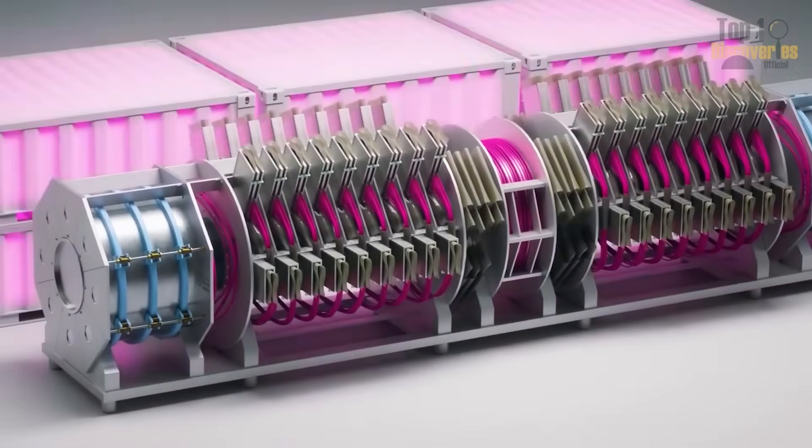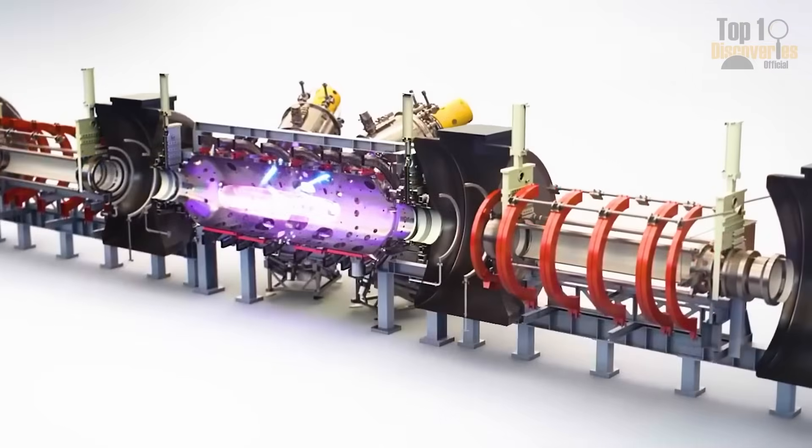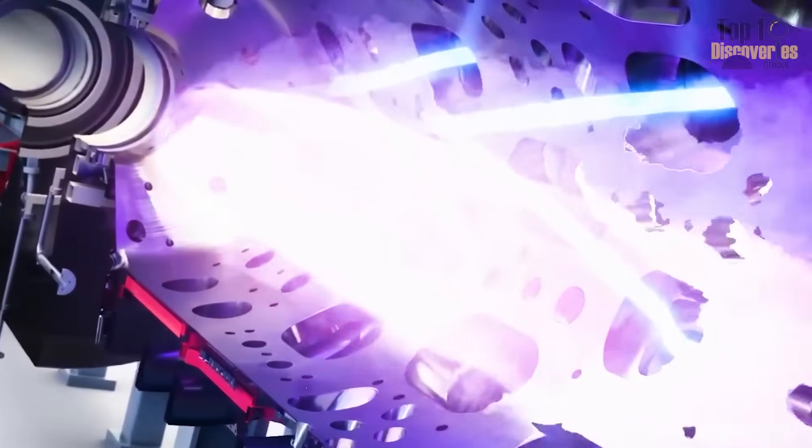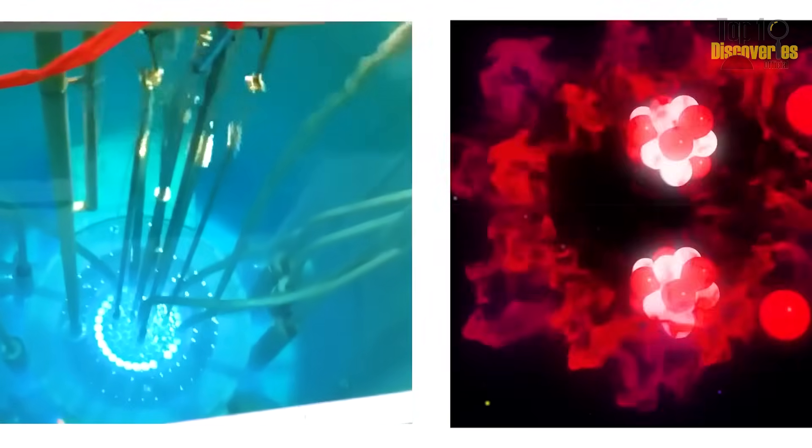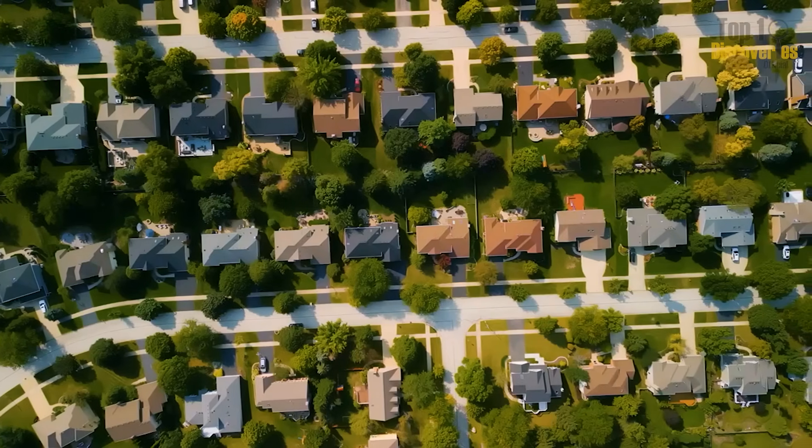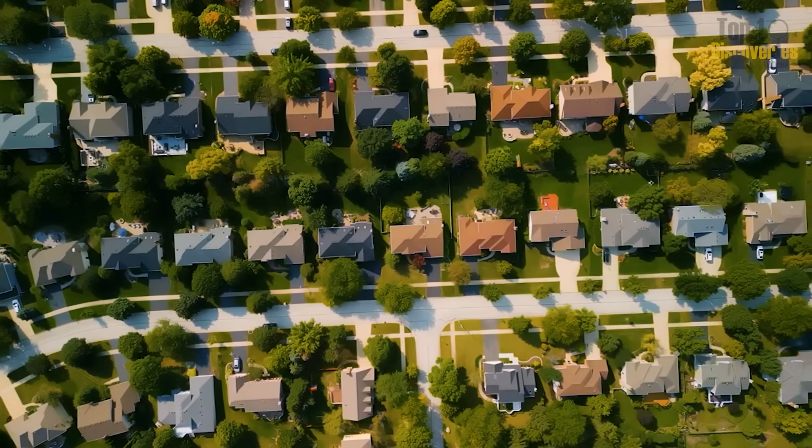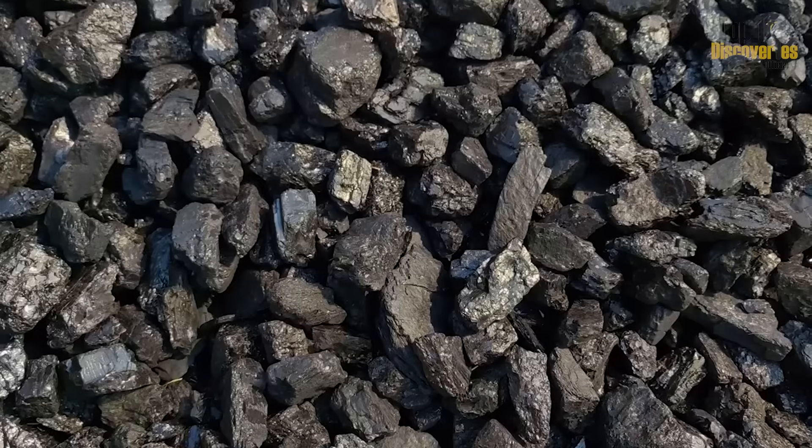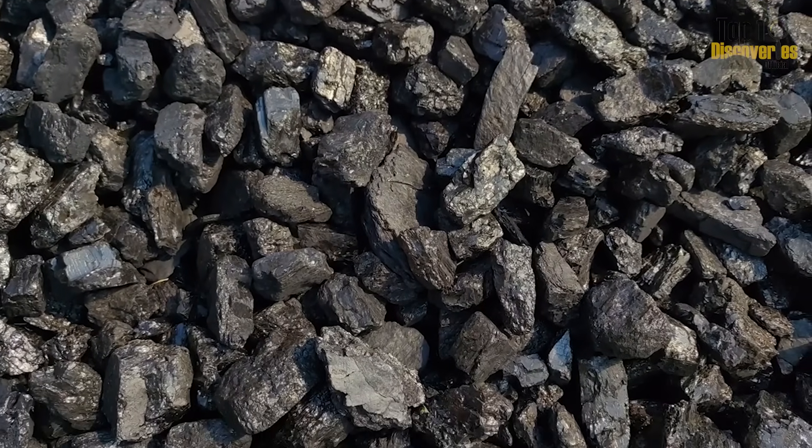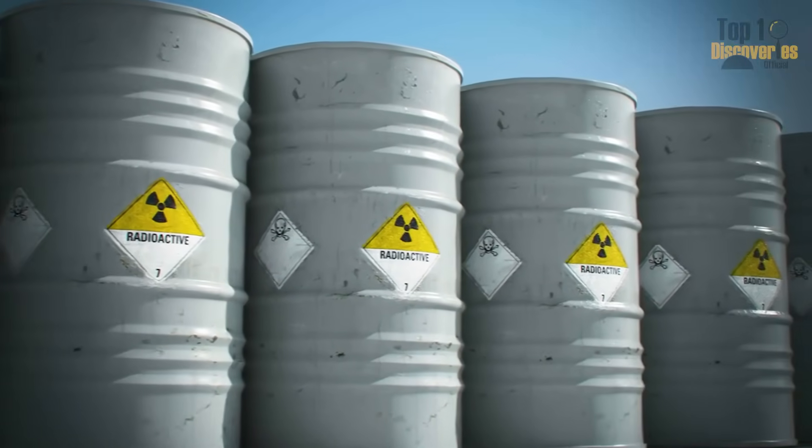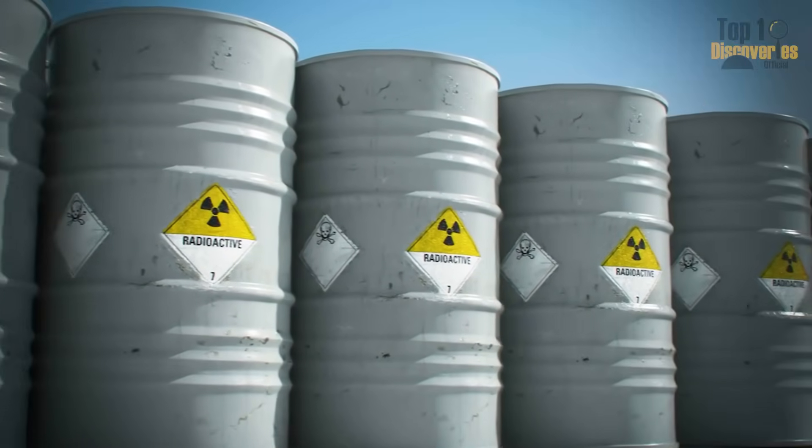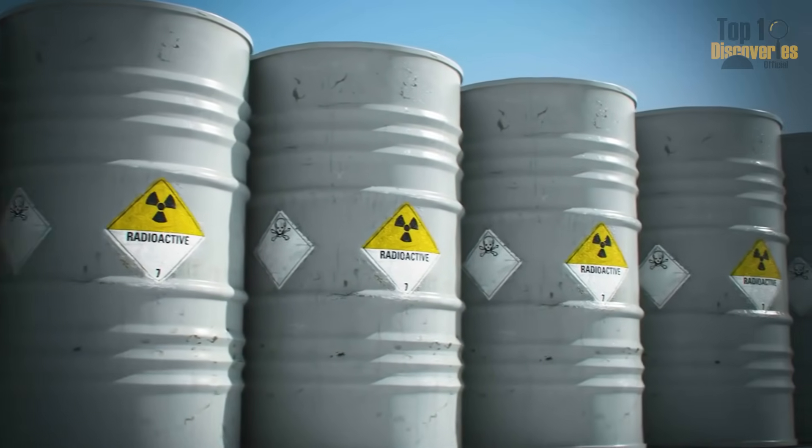Unlike uranium, thorium does not undergo fission on its own, but is converted into uranium-233 within a reactor, producing energy with a near-zero risk of meltdown. A mere 2,200 pounds of thorium can power one million households for a year, equivalent to several tons of uranium or millions of tons of coal. Yet its radioactive waste persists for only 300 to 500 years, compared to tens of thousands of years for uranium.